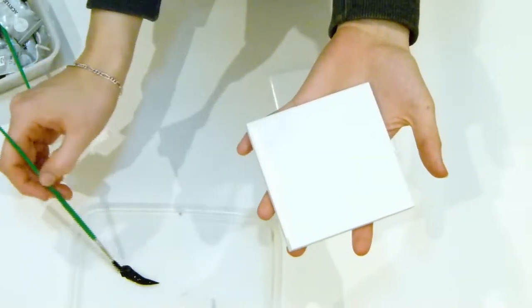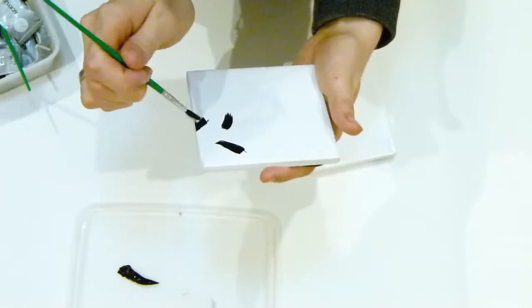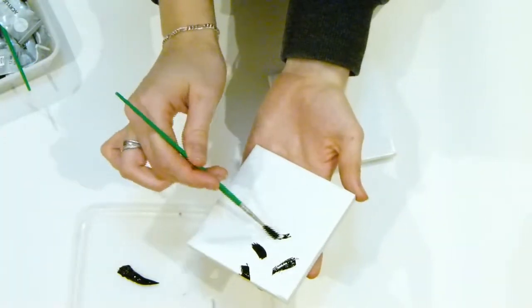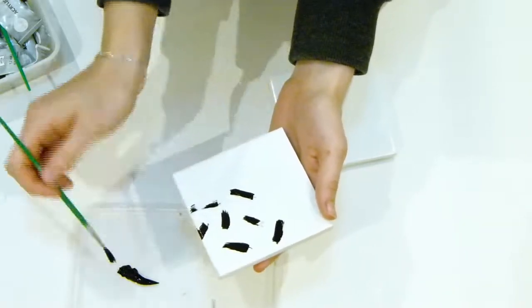Start off by grabbing your tiles. These are really cheap and inexpensive to buy from any home improvement shop - I got mine from B&Q. I'm just grabbing some acrylic paint and a paintbrush.